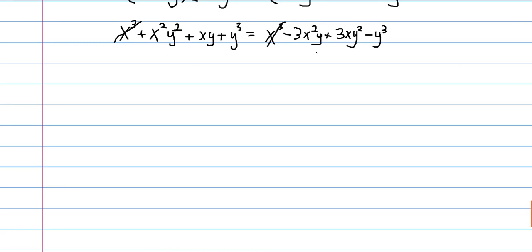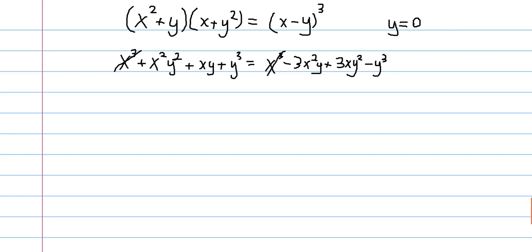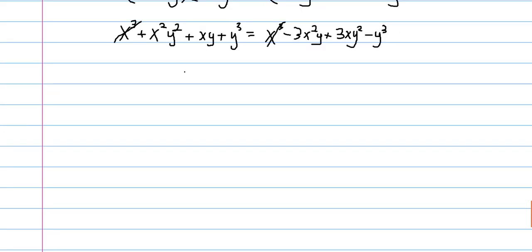Now, so we can divide out by y, if we assume that y is not equal to 0 from here on out. And what we get is something quadratic in y, so I'm going to write it like that. We get 2y squared plus x squared minus 3 times x times y, plus 3x squared plus x.